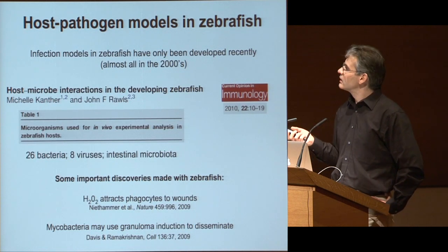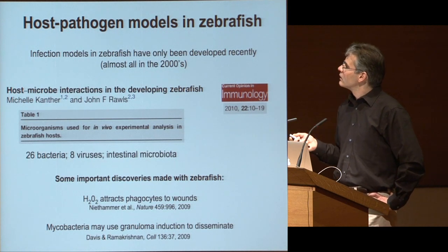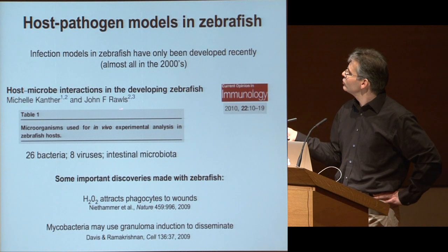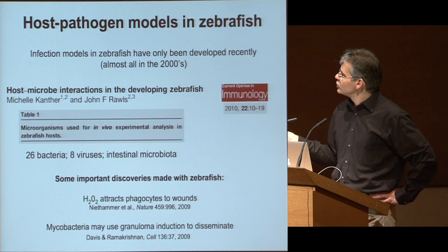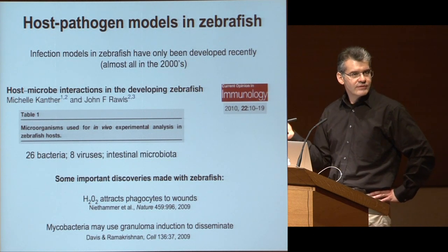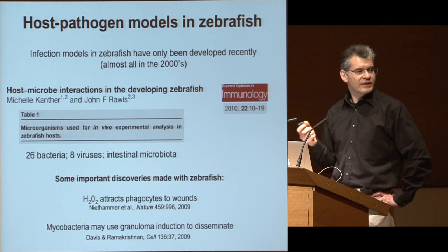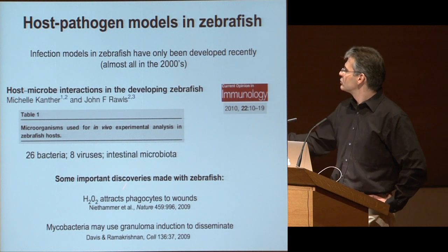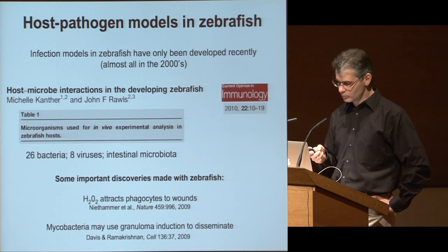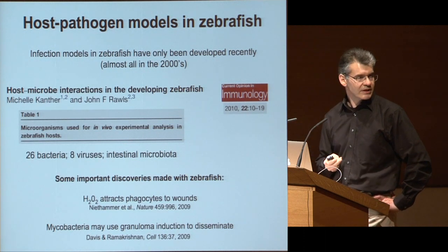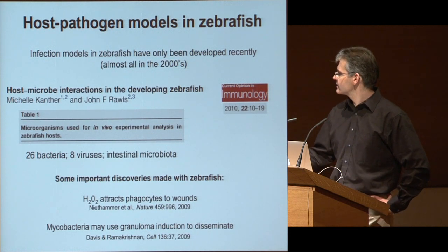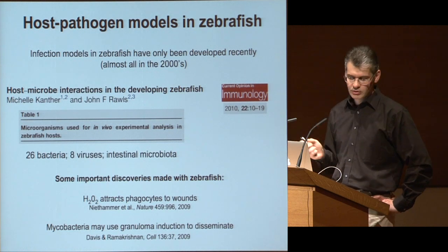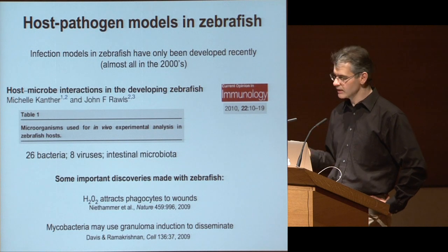Where zebrafish is less advanced is in infection models; this has been tackled only in the last ten years or so. A review by Michel Canter and John Rawls in Current Opinion in Immunology shows that many bacteria have been used successfully to infect zebrafish, as well as a few viruses, and it's relatively easy to get germ-free animals and colonize them with a given intestinal microflora. Key discoveries include that hydrogen peroxide is a major chemoattractant for phagocytes at a sterile wound, and that mycobacteria can use granuloma to disseminate, shown in the Mycobacterium marinum model — a natural pathogen of zebrafish studied in great detail by Lalita Ramakrishnan.